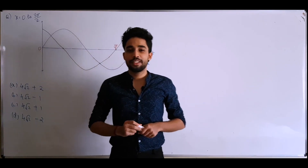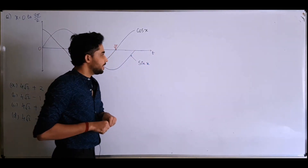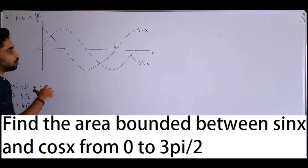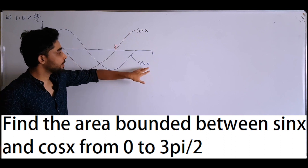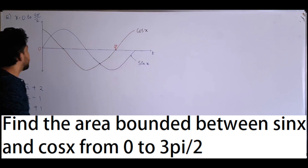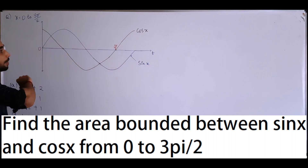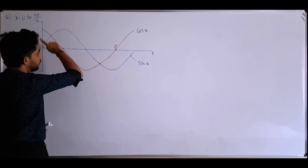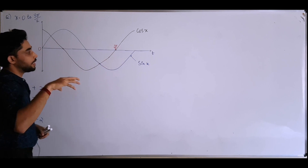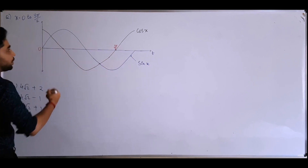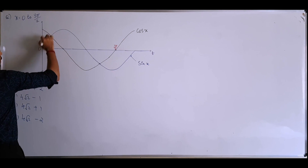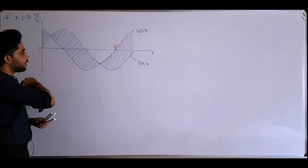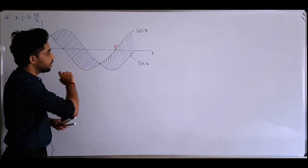Hello everyone, welcome back to another video of Detangle. In this video, we have to find the area between the curves cos x and sin x from 0 to 3π/2. This is the sin graph and this is the cos graph, and we have to find the area in between them — this shaded region here.